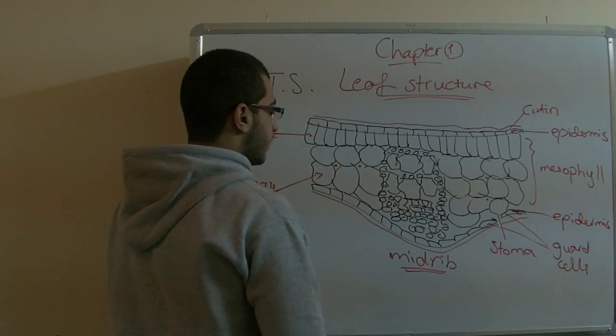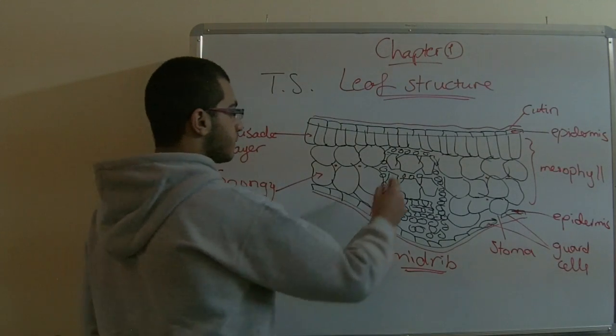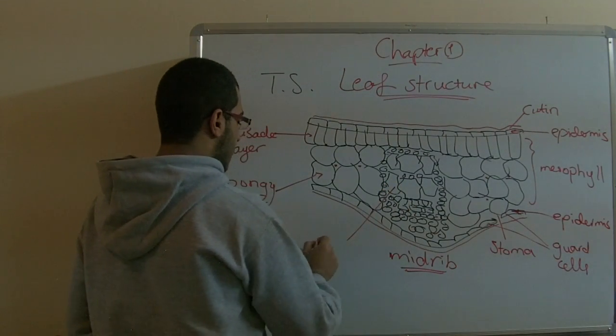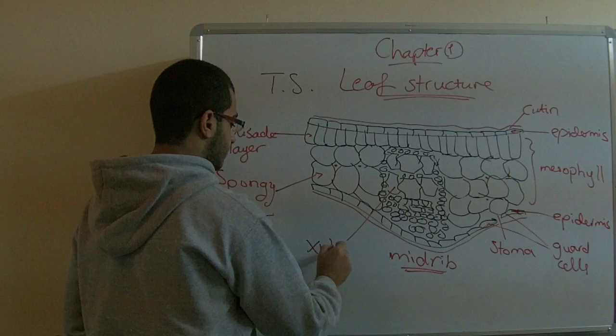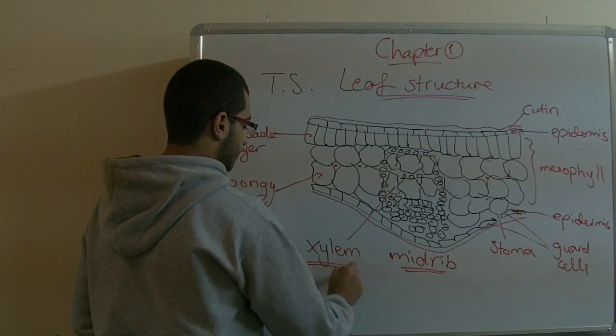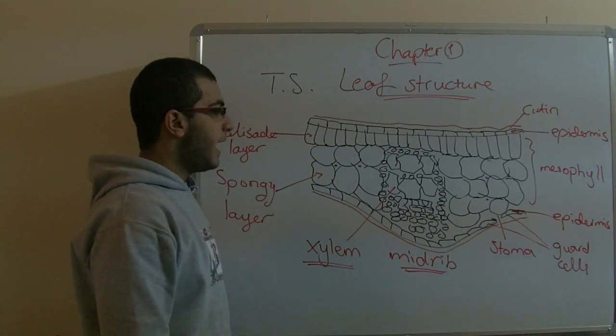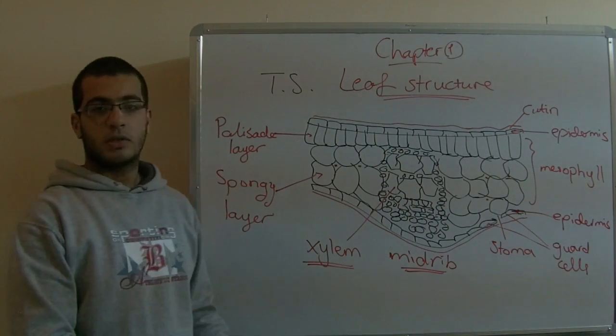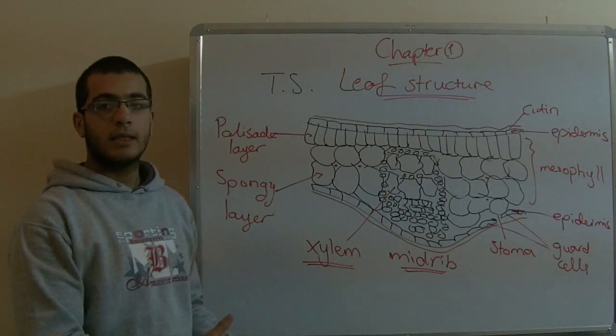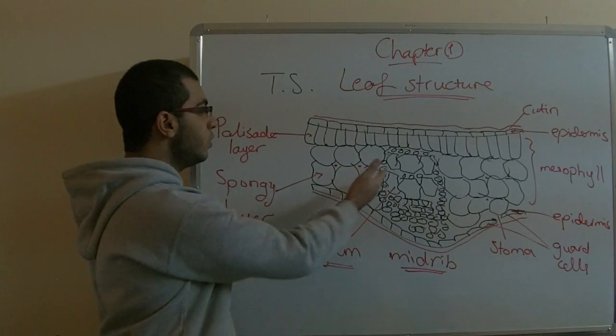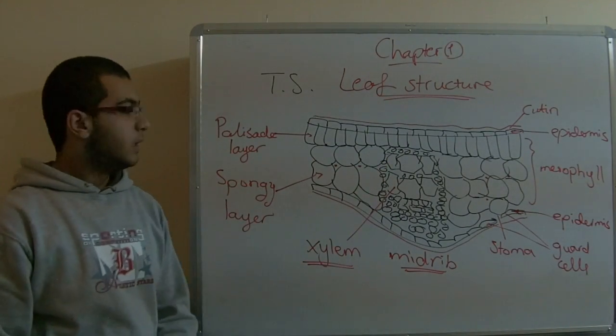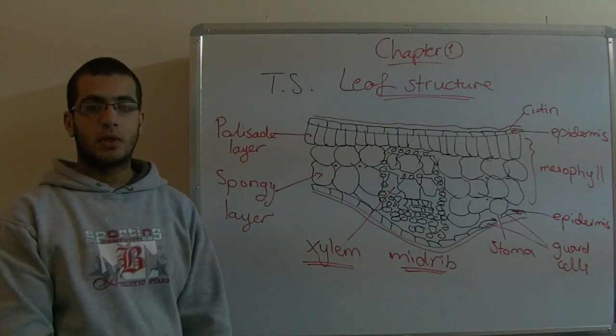This midrib consists of the xylem. The xylem acts as a transport system which transports the water and the salts to the leaves of the plant in order to carry out the photosynthesis process.